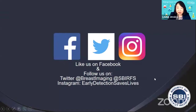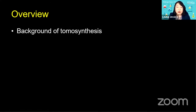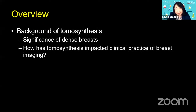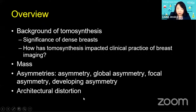Now I'll start the lecture. The overview is as follows: first, background on tomosynthesis involving the significance of dense breasts, followed by how tomosynthesis has impacted clinical practice of breast imaging from screening to the diagnostic setting. I will talk about each lesion in turn. For this lecture, we have three categories: mass, asymmetries — which include asymmetry, global asymmetry, focal asymmetry, and developing asymmetry using the BIRADS lexicon — and lastly, architecture distortion.